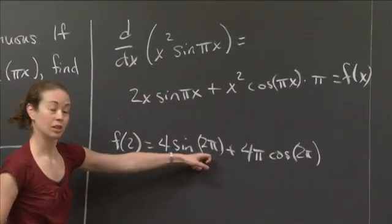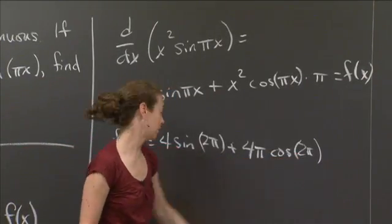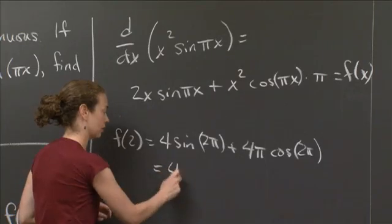So what do I get? Sine 2 pi is 0. Cosine 2 pi is 1. So ultimately, I just get 4 pi.